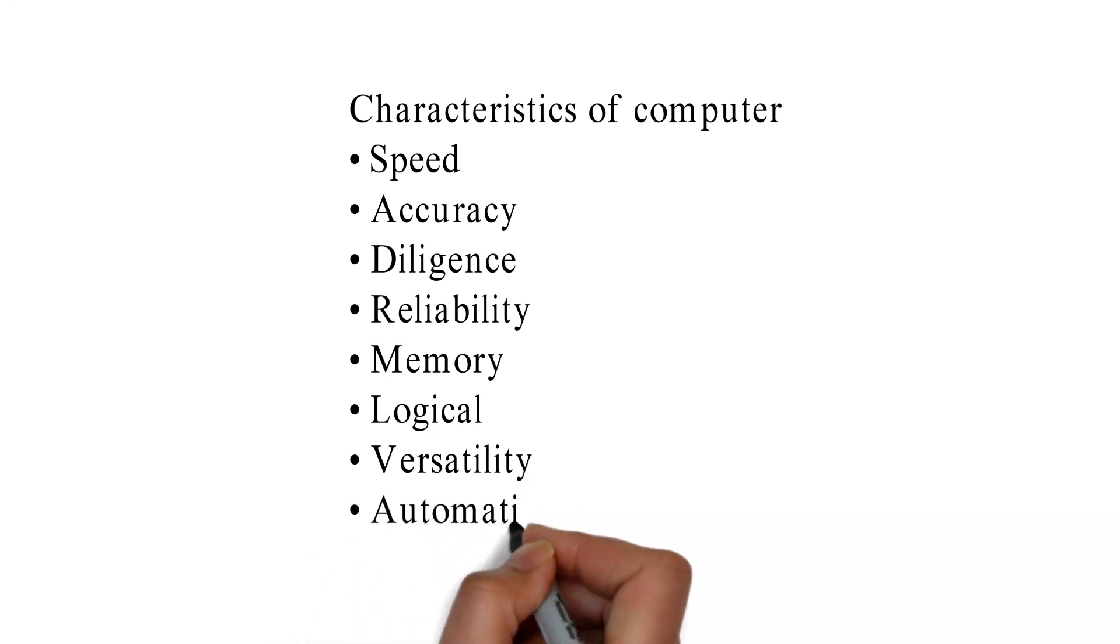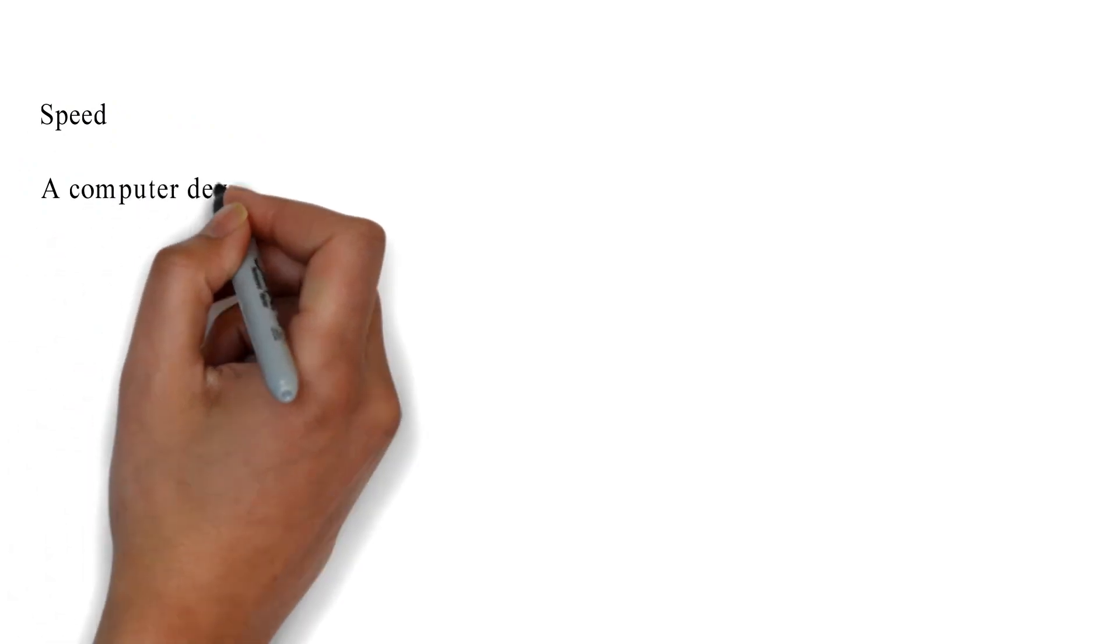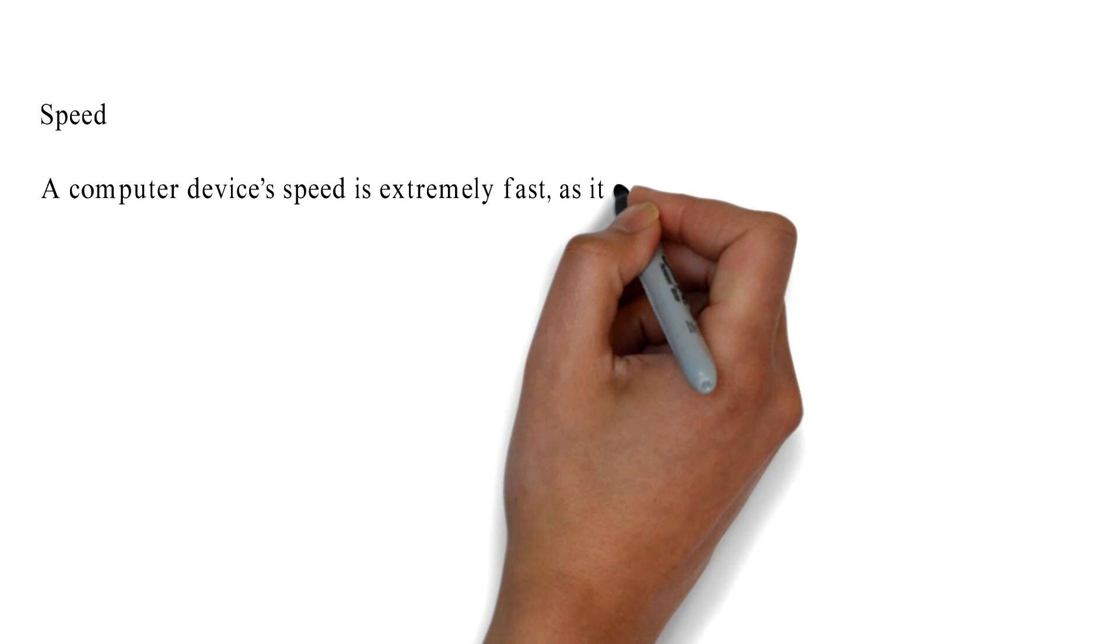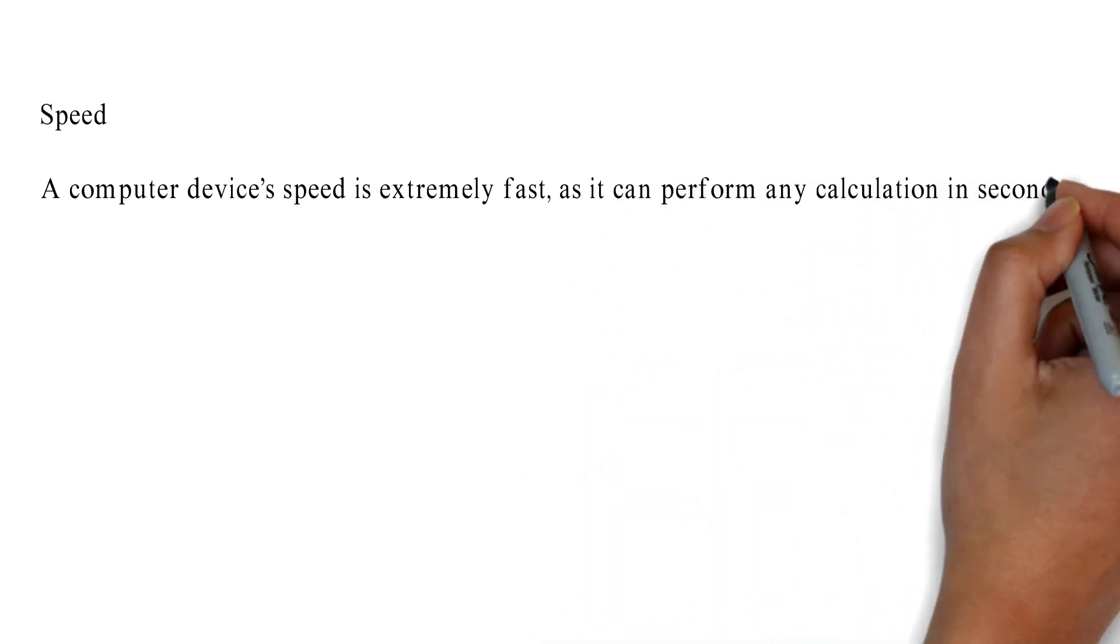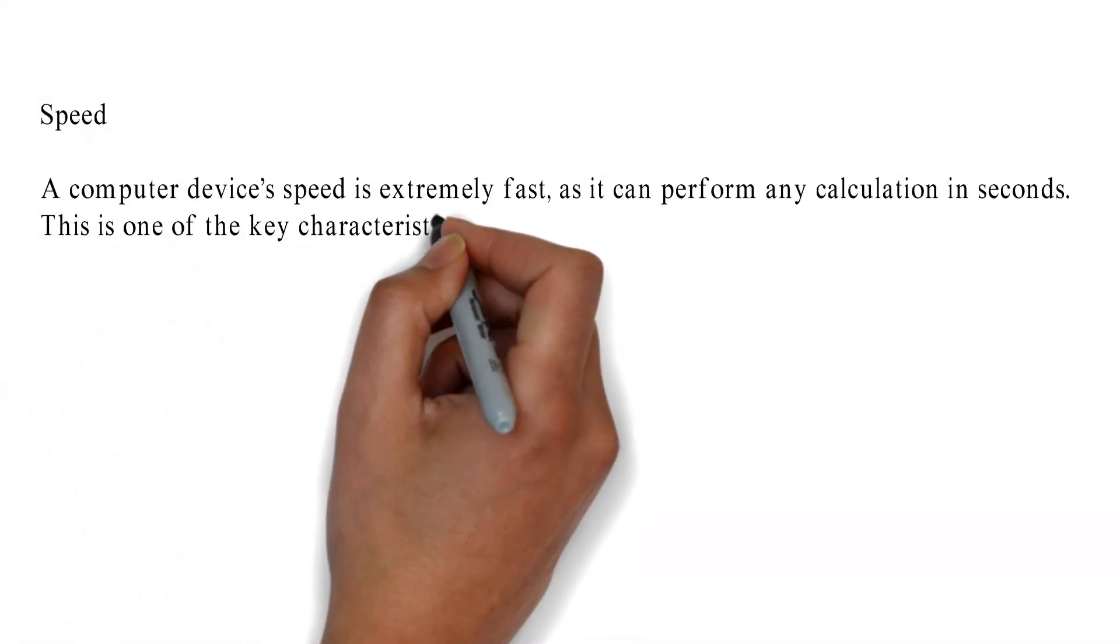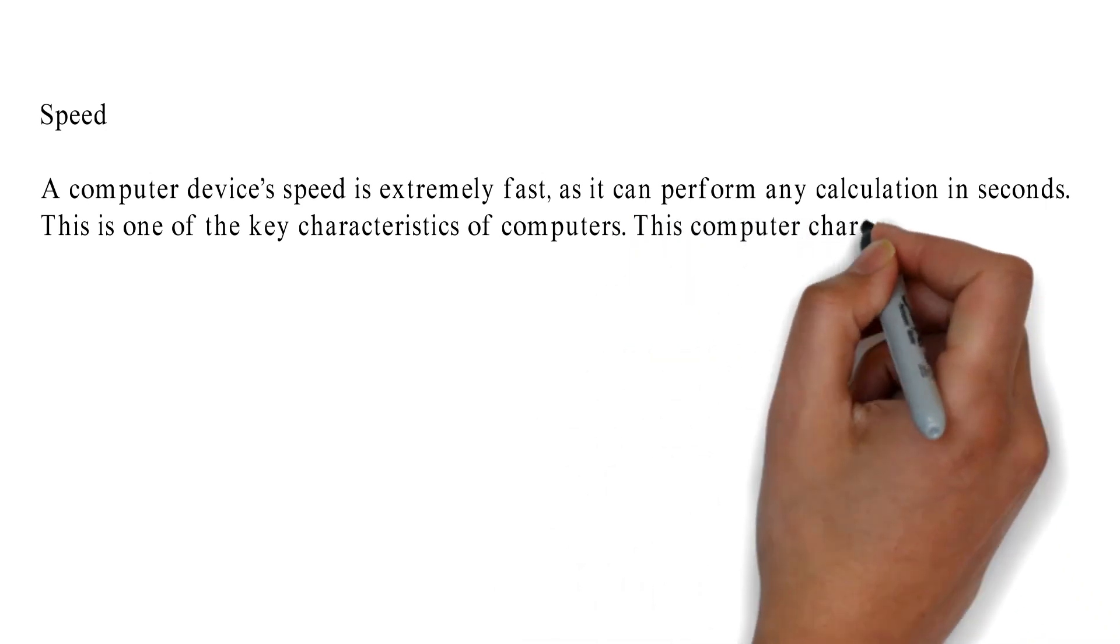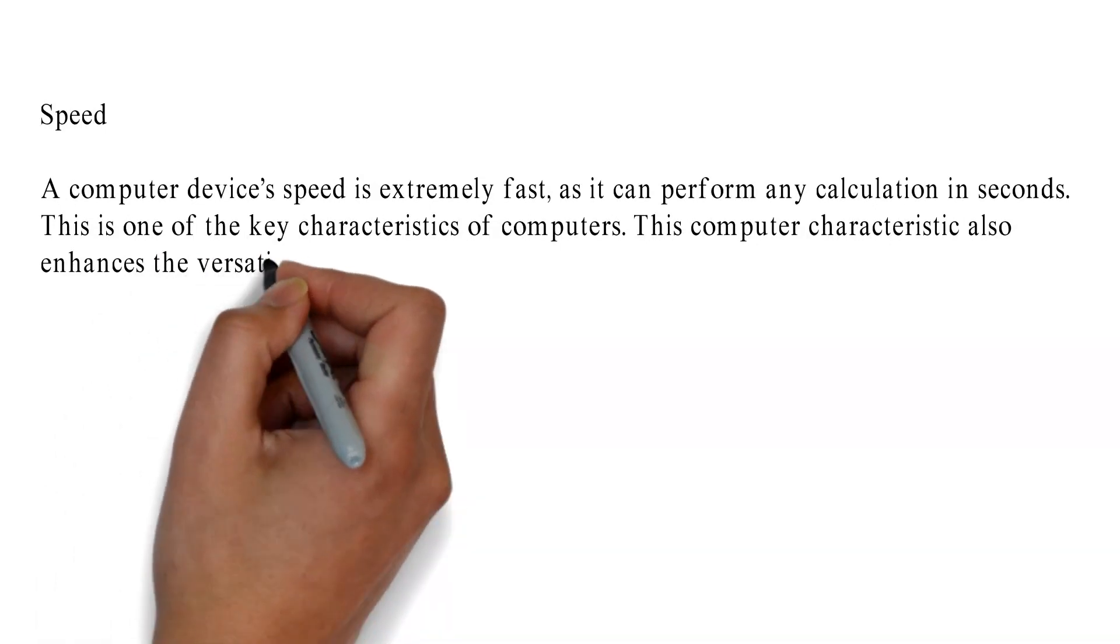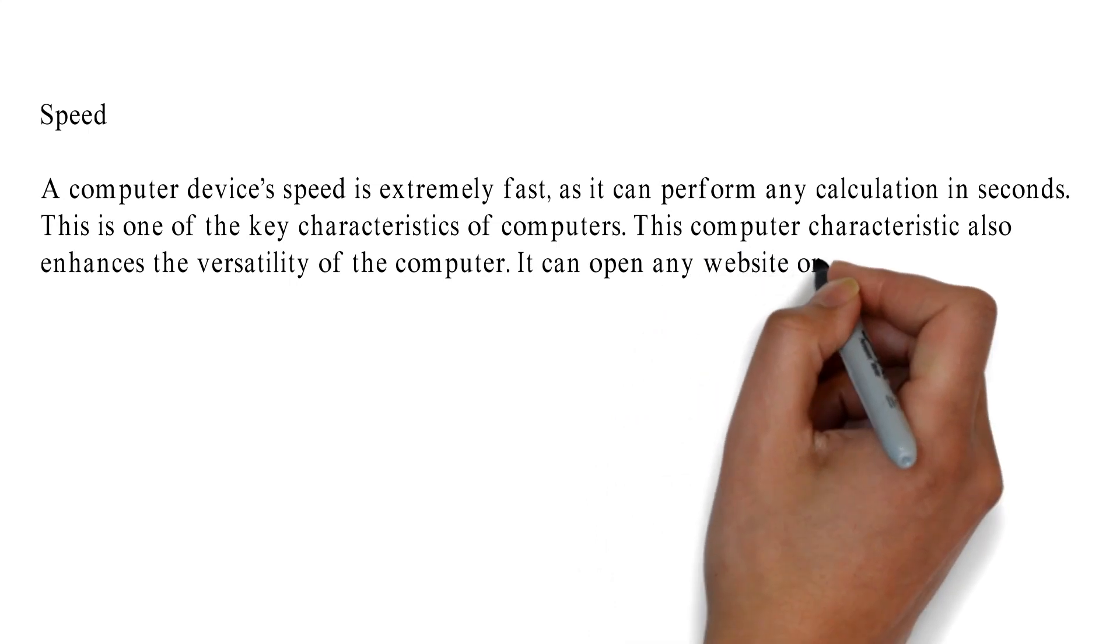Speed: A computer device's speed is extremely fast, as it can perform any calculation in seconds. This is one of the key characteristics of computers. This characteristic also enhances the versatility of the computer. It can open any website or application in the blink of an eye. In real life, the computer is like our superhero Flash—it can travel at the speed of light.